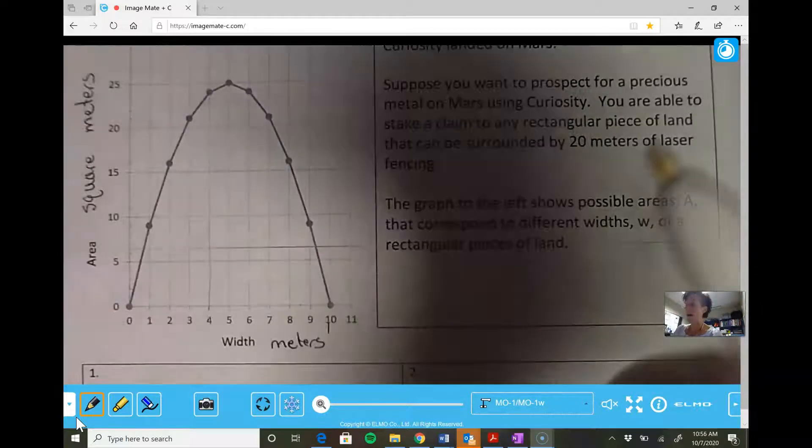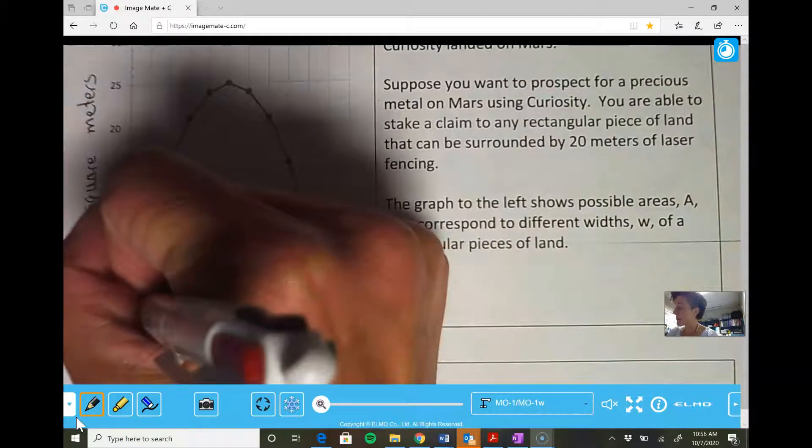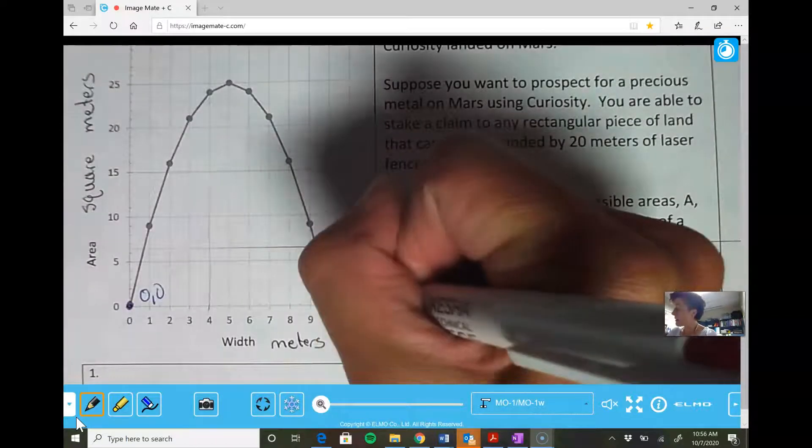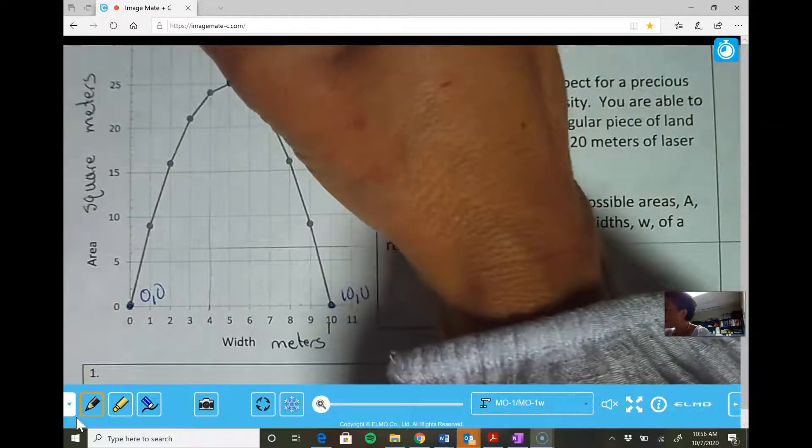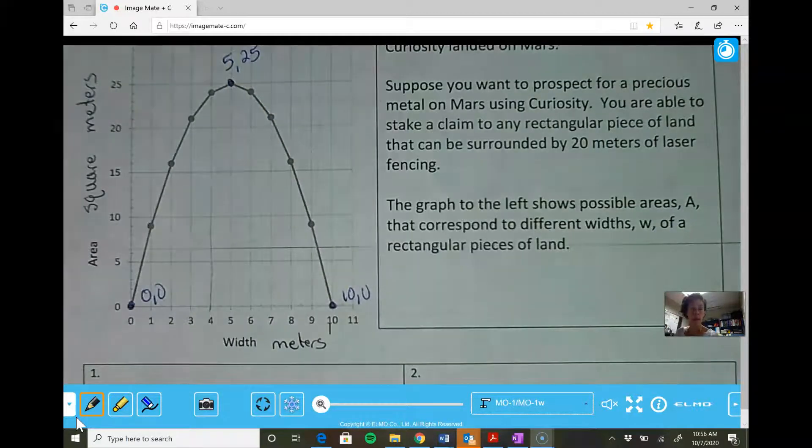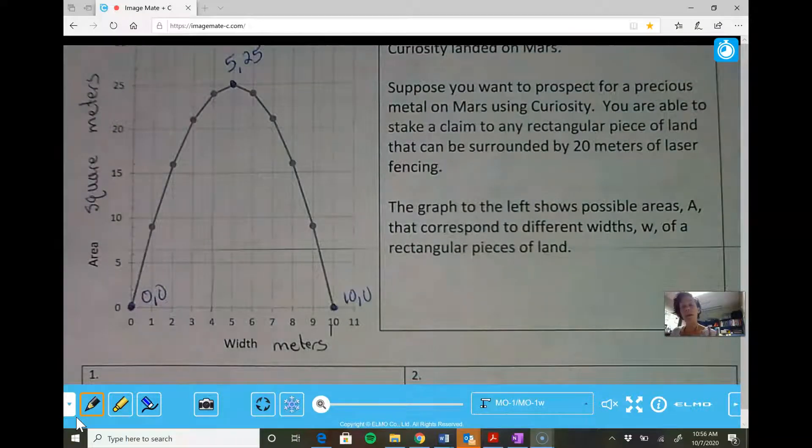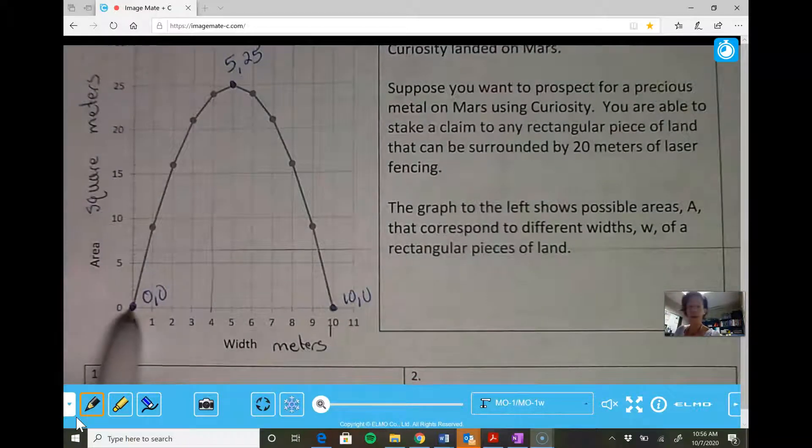Alright. So every time we work with the graph, we mark our important points. So where it starts, zero, zero, where it ends, 10, zero, and where it turns, five and 25. And then we also want to mark our x-intercepts, but I got those here.